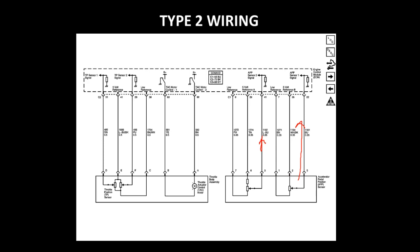On a Type 2 system you don't have a standalone TAC module — that function is taken over by the engine control module. You still have your components on the throttle body to control the throttle plates: the TAC motor, which is actually a stepper motor that controls the opening and closing of the throttle plates, and a series of TP sensors that tell us the position of the throttle plates themselves. As you step on the gas pedal, your APP sensors send a signal to your ECM, your ECM determines your need for throttle opening, and then commands the TAC motor to open the throttle plate. It then uses information coming back from the two TP sensor potentiometers mounted on the throttle body to determine if the command for the TAC motor is correct or not.